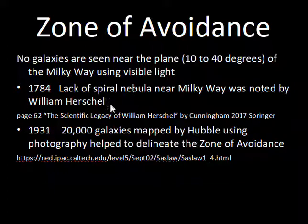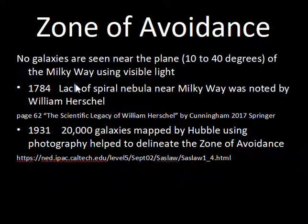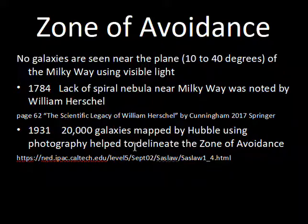William Herschel and his sister started surveys of the sky, mapping and counting stars and galaxies. One piece of information from their work, in a paper that William Herschel published in 1784, noted a lack of these spiral nebulae near the Milky Way. In 1931, with photography, Edwin Hubble mapped out 20,000 galaxies across the sky, which helped astronomers define the boundary of the zone of avoidance in more scientific detail.